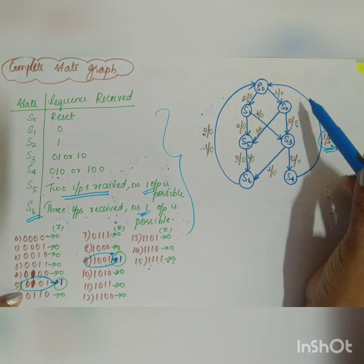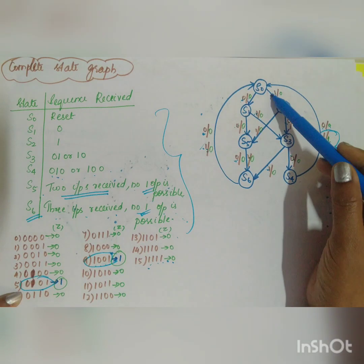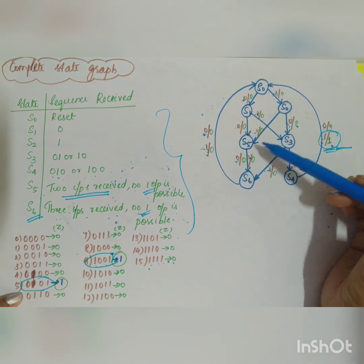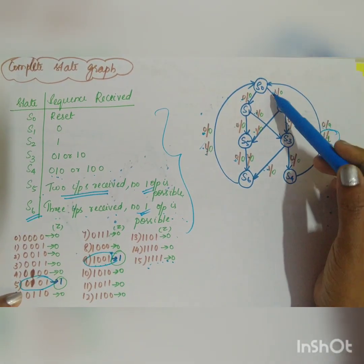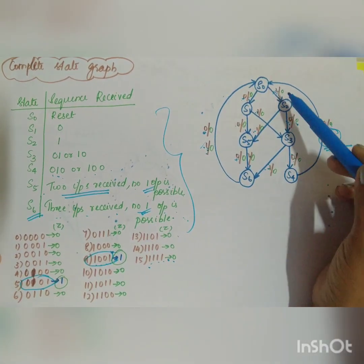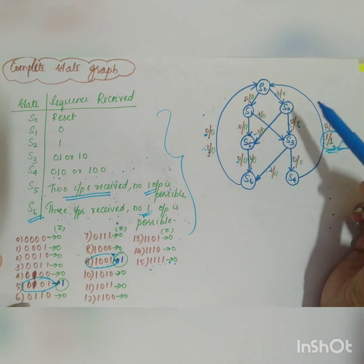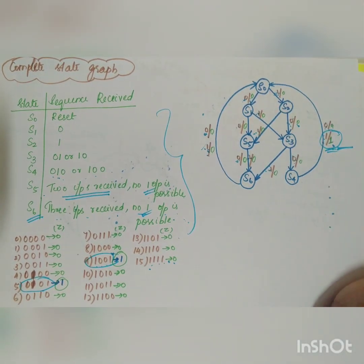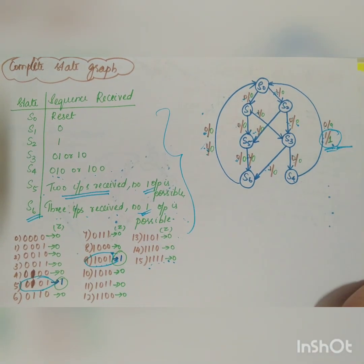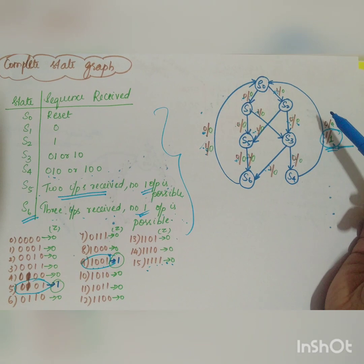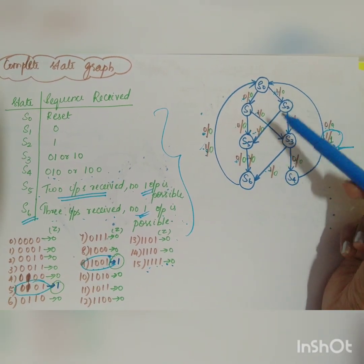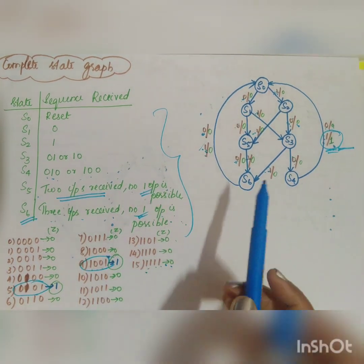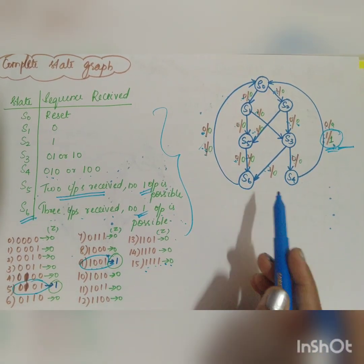After checking all 16 combinations from 0 to 15, you confirm there is only one corresponding path back to the initial state for the valid output sequences. This is how you complete the state graph for this problem — first by drawing the partial state graph, then extending it to the complete state graph.